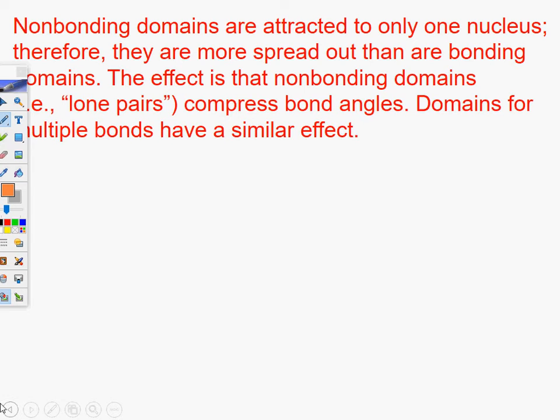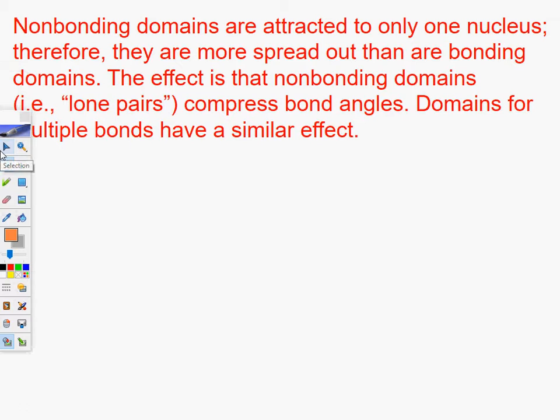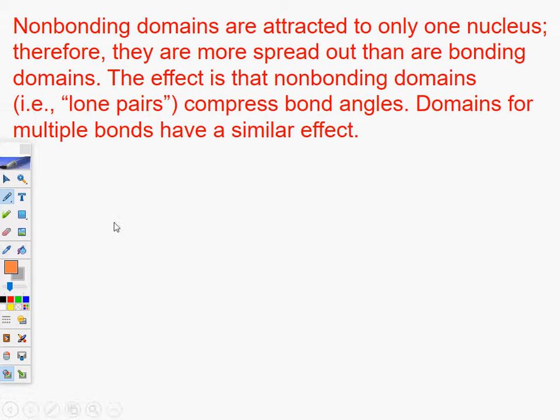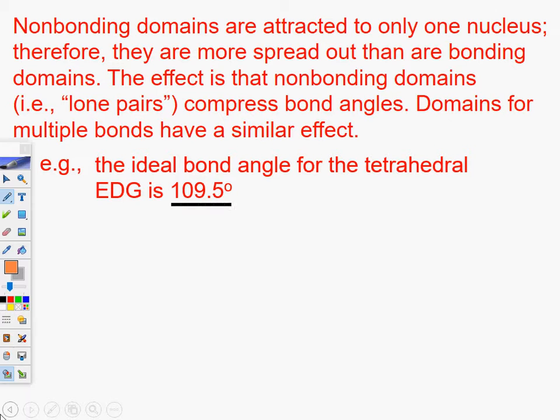Moving on. Non-bonding domains are attracted to one nucleus. Therefore, they spread out more than the bonding domains. The effect of non-bonding lone pairs compress bond angles. Here's what we talked about. Remember, we talked about this. Tetrahedral is 109.5. Let's see if you can see a pattern here. Go ahead and predict what the bond angles are going to be for those. See if you can do that.